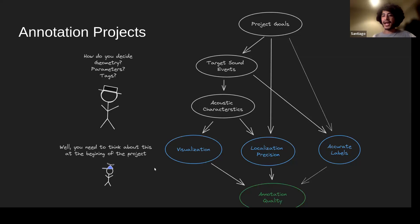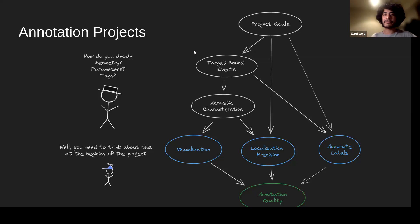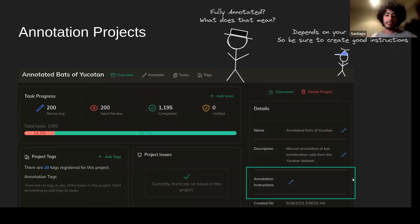How do you decide what geometry, parameters, and tags to use? That needs to be decided when you start your annotation project. Depending on project goals you'll focus on certain sound events, which determines the type of acoustic characteristics to consider, what visualization parameters to use, what level of localization detail you want, and what labels or tags to use — maybe just family or order level rather than species level. All of these will influence whether your annotations are adequate to your project goals.